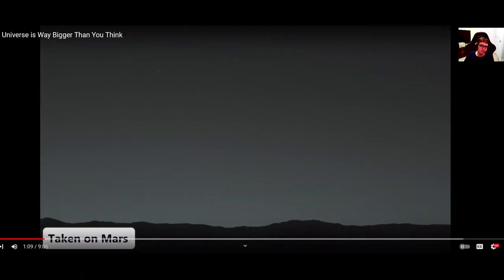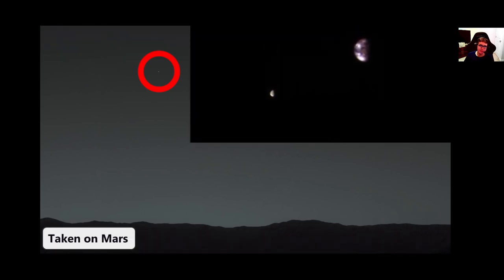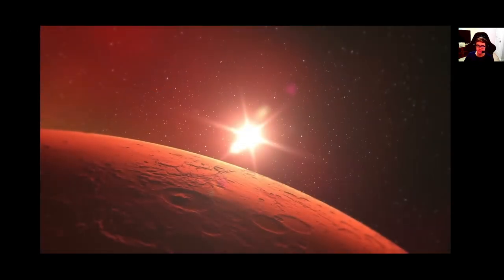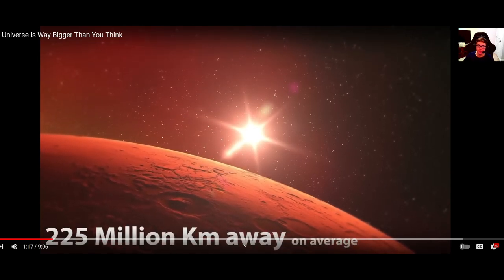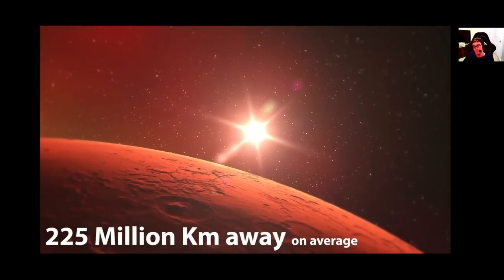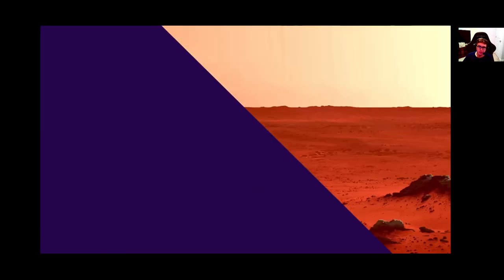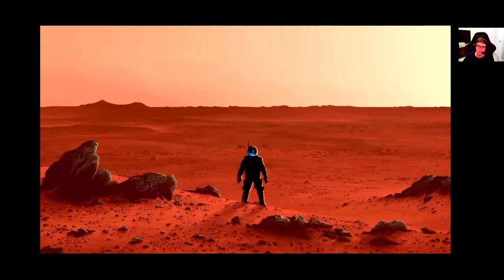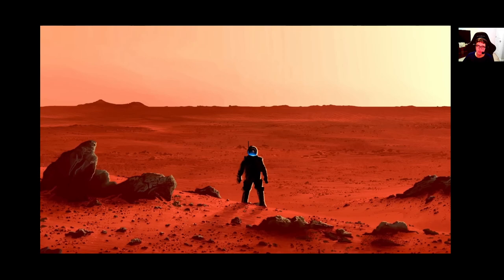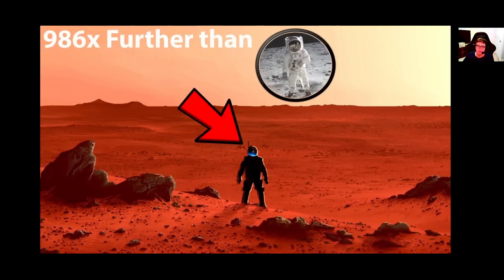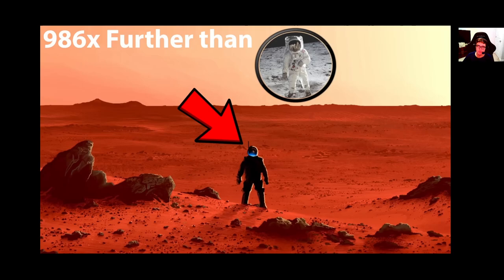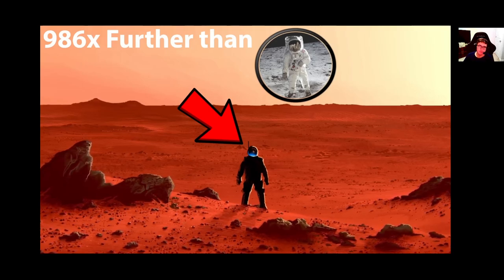This is a photo that was taken on Mars, and that tiny dot that you see there is Earth as seen from the Martian surface. On average, Mars is an incredible 225 million kilometers away from Earth, but that distance can be as high as 401 million kilometers. That means that whenever humanity finally gets around to landing a human on the planet, that person will be 986 times further away from Earth than the astronauts who landed on the moon were.